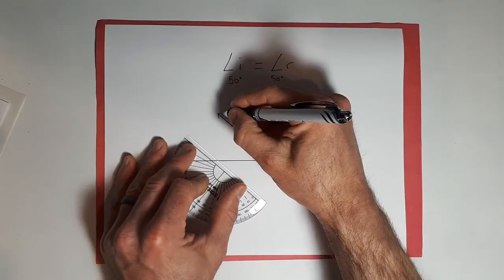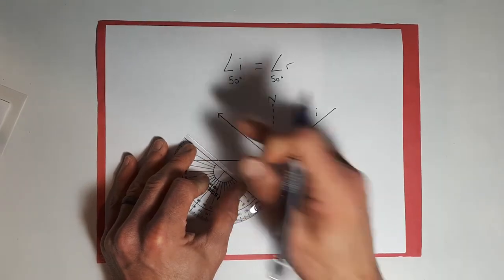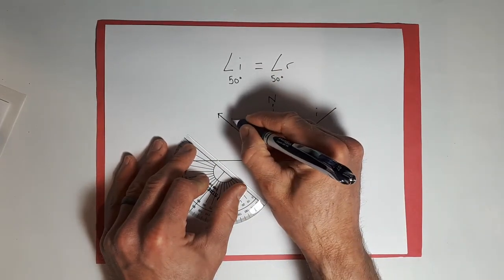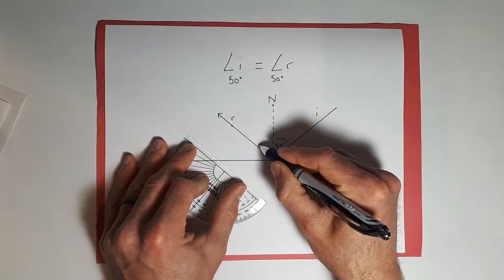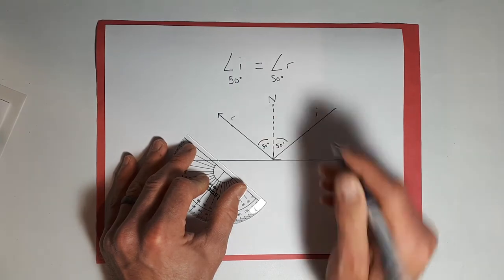I'm going to put an arrowhead here to show the direction of the light. So incidence and then reflection. So we're going to put an R here for reflection. And we can call this angle here 50 degrees as well now. Measured.